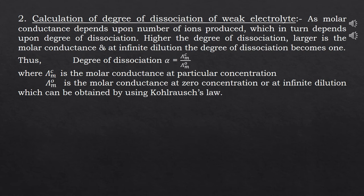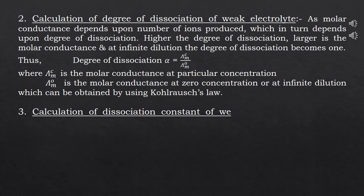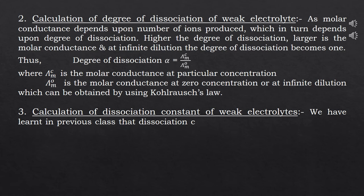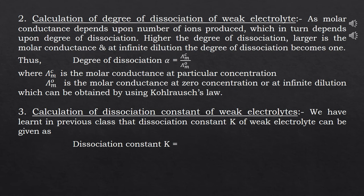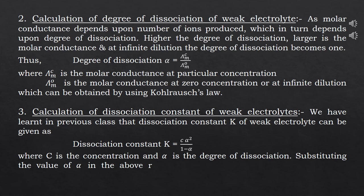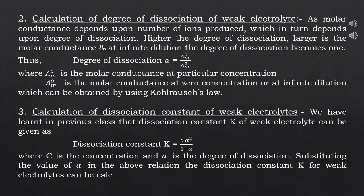The third application is the calculation of the dissociation constant of weak electrolytes. The dissociation constant K of a weak electrolyte is given as K = Cα²/(1 − α), where C is the concentration and α is the degree of dissociation. Substituting the value of α, the dissociation constant K for weak electrolytes can be easily calculated.